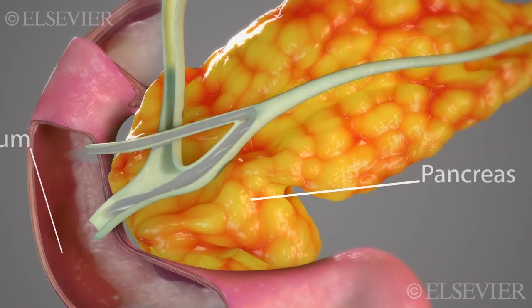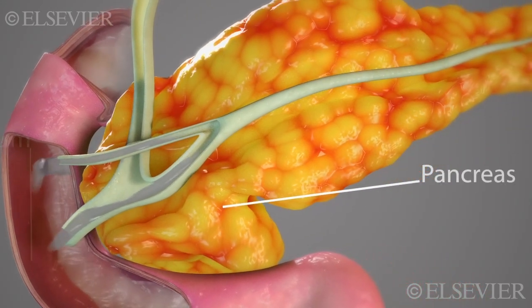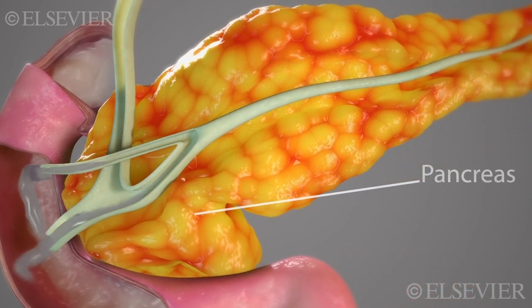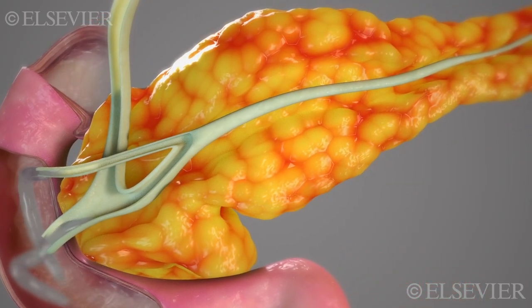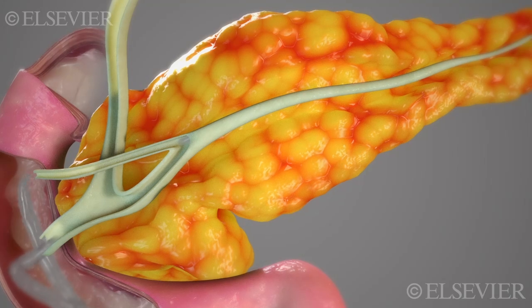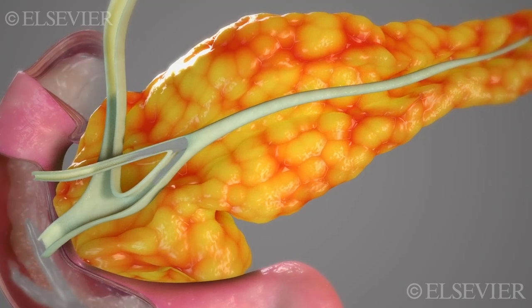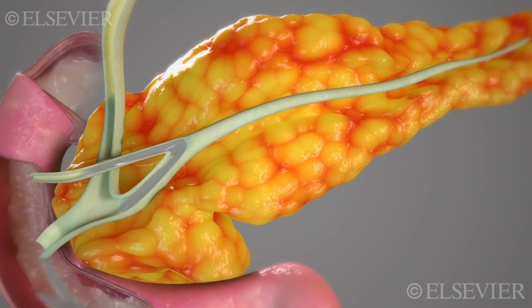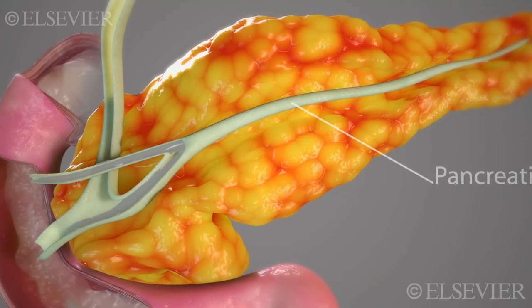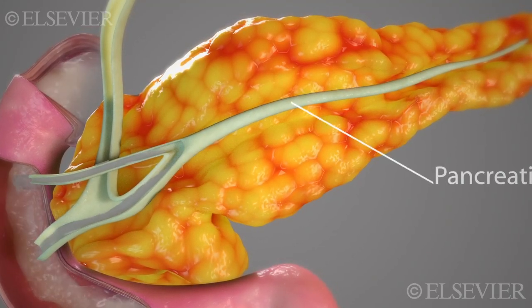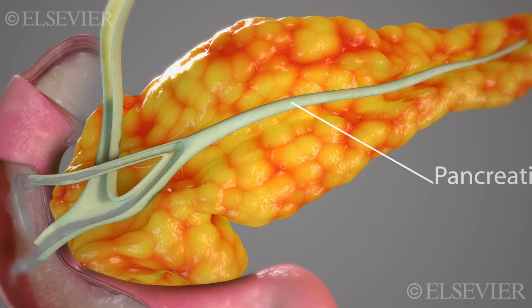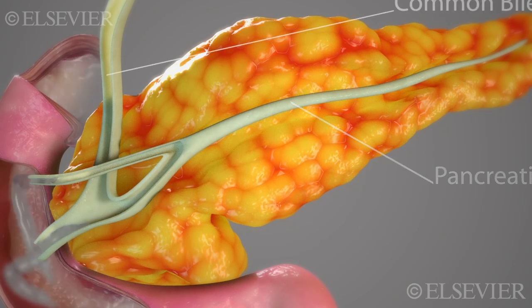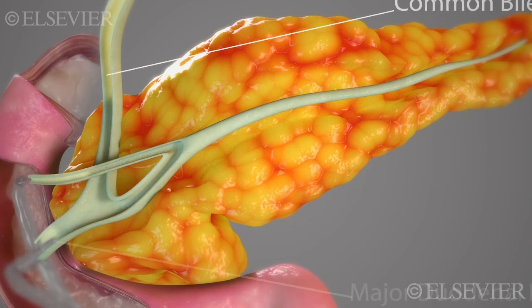The pancreas secretes crucial enzymes for digesting lipids, proteins, and carbohydrates. Pancreatic secretions travel through the pancreatic duct, which connects with the common bile duct at the major duodenal papilla.